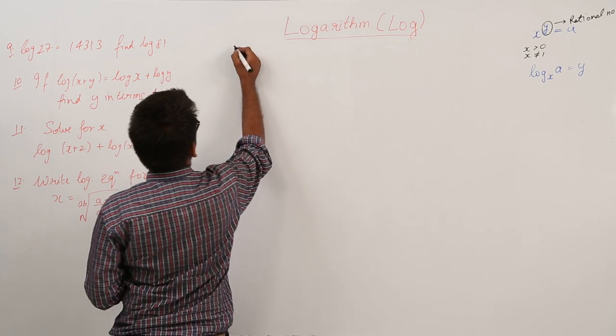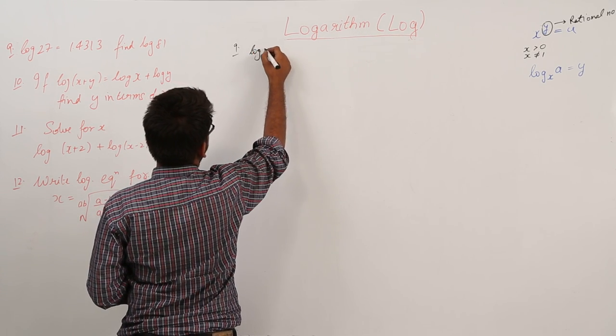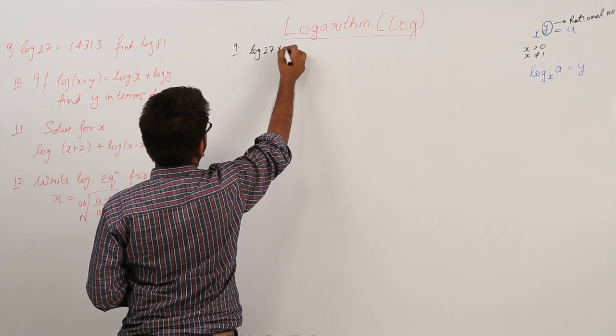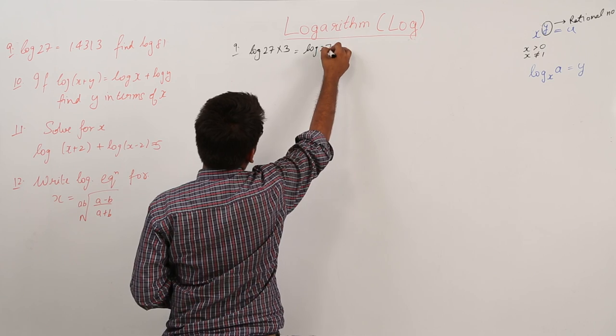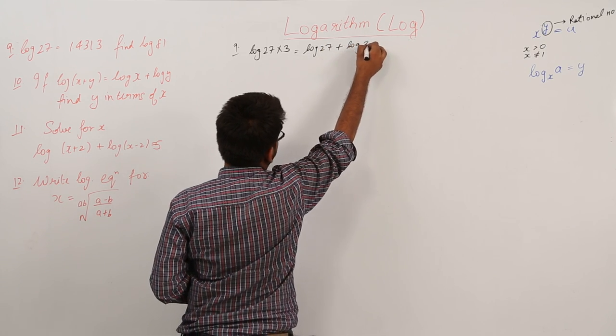So let us see, log 81 can be written as log of 27 times 3, right? This can be written as log 27 plus log 3.